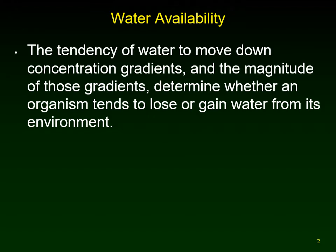From looking at biomes and patterns of rainfall on the planet, the availability of water on land varies a lot. The tropical rainforest has an overabundance of moisture all year, and hot deserts obviously have a lack of moisture. A lot of the work on water balance and water relations has been done on desert environments because of the severe problems with maintaining adequate water supply there.